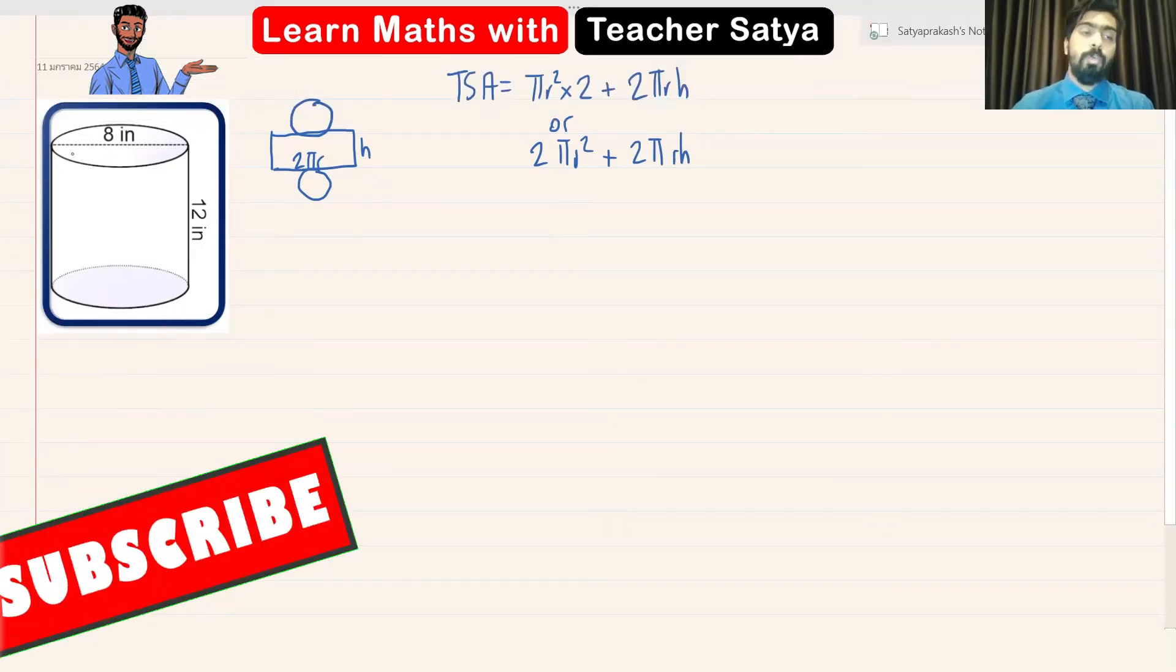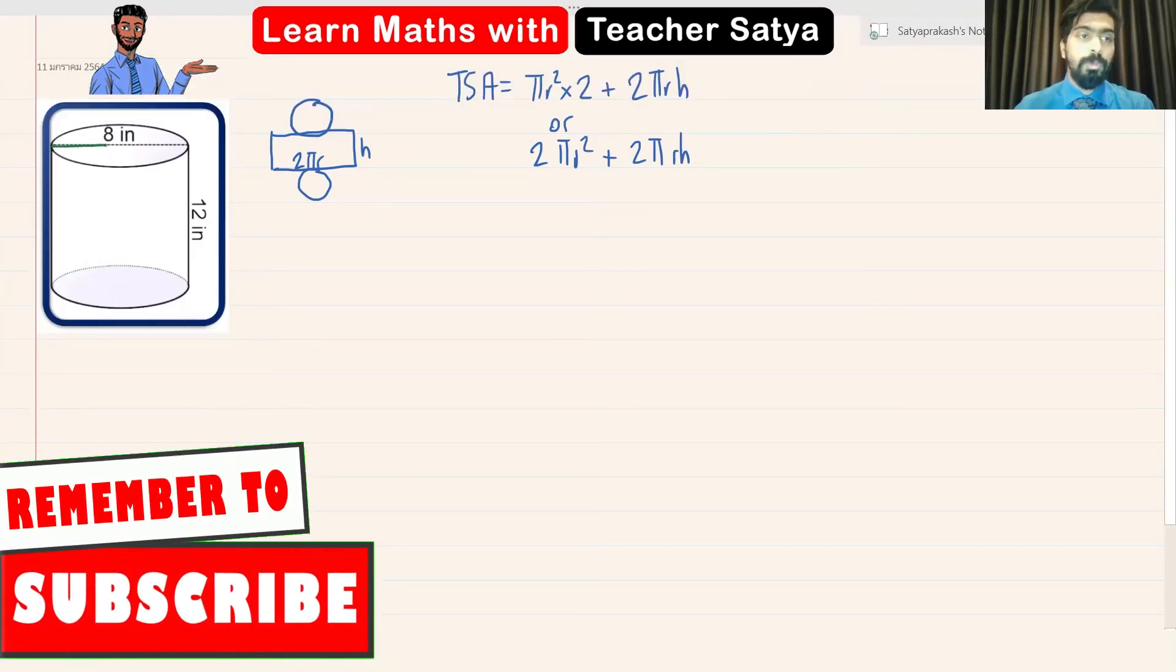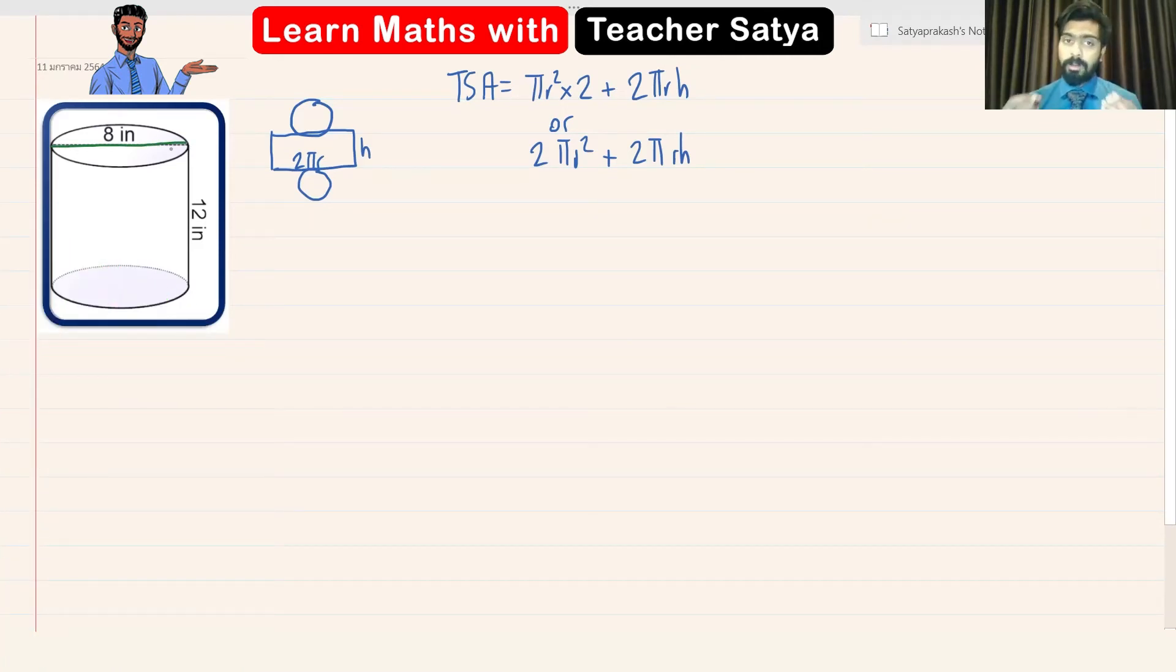Now, in this question, what we have here is we have a diameter as eight inches, right? But in order to find the TSA, we need to use the radius. So in this one, the radius would be half of the diameter, which is equal to four inches. Right, guys?